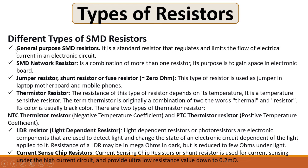The types of SMT resistors are: first, general purpose SMT resistors — a standard resistor that regulates and limits the flow of electrical current in an electronic circuit. Second, the SMT network resistor — it is a combination of more than one resistor, and its purpose is to save space on electronic boards.